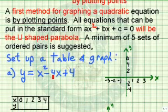So if we have y=x²-4x+4, let's pick some arbitrary points for x: 0, 1, 2, 3, 4. Let's find if we let x equal 0, what's the value of y?